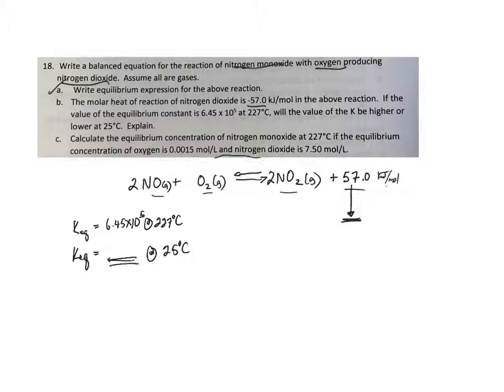If this decreases, if you think about that ball, if this side goes down, then the ball is going to favor the right side, so the equilibrium will shift to the right side. So if the equilibrium shifts to the right side, it means that the K value is getting bigger.